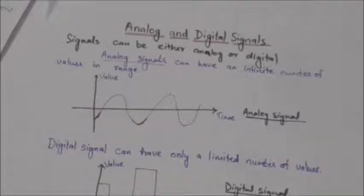Signals can be either analog or digital. Analog signals can have an infinite number of values in a range. An analog signal has infinitely many levels of intensity over a period of time.